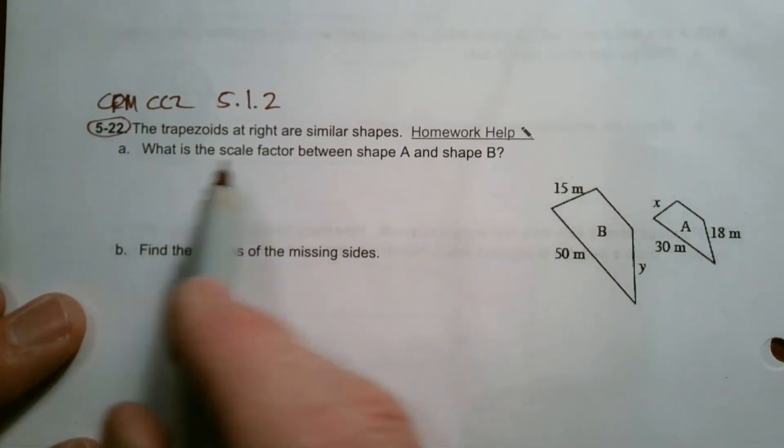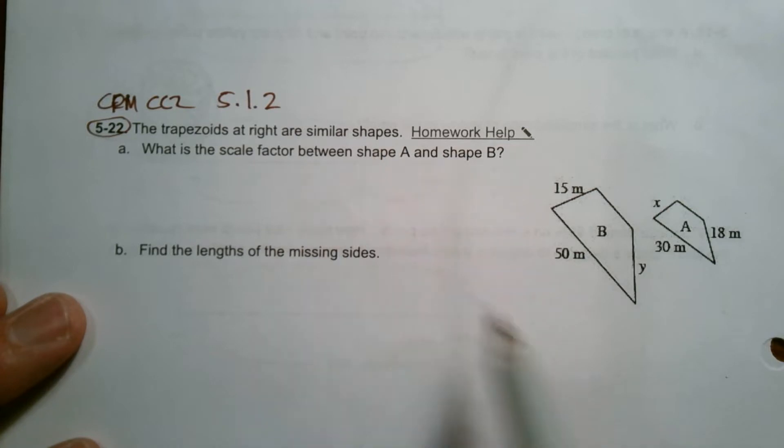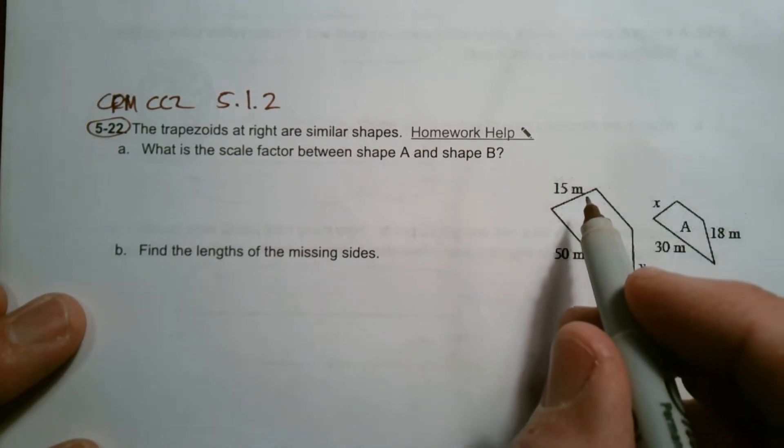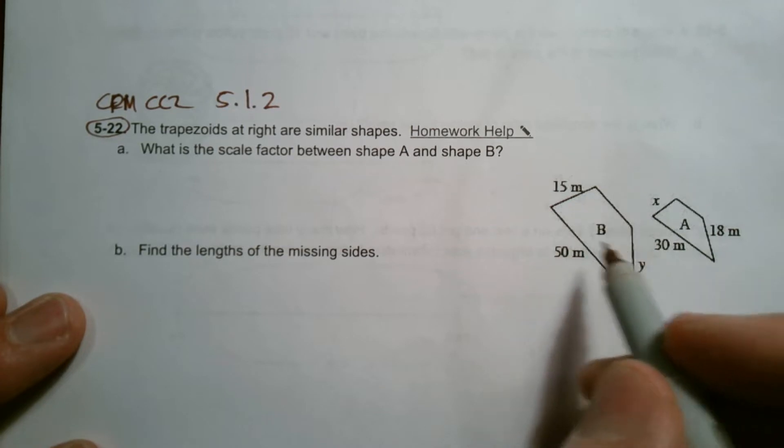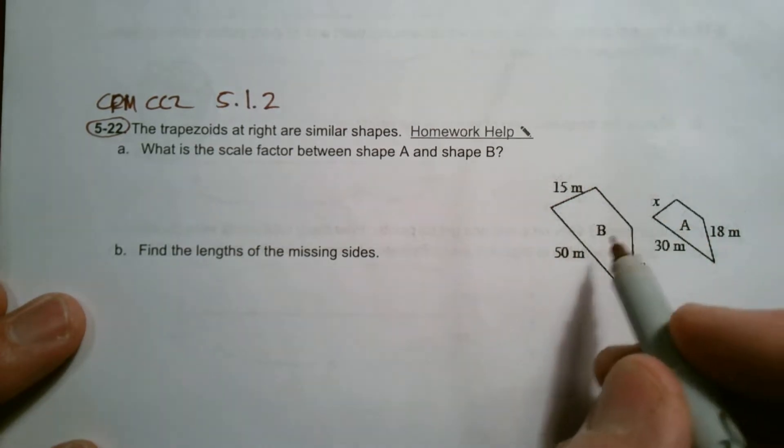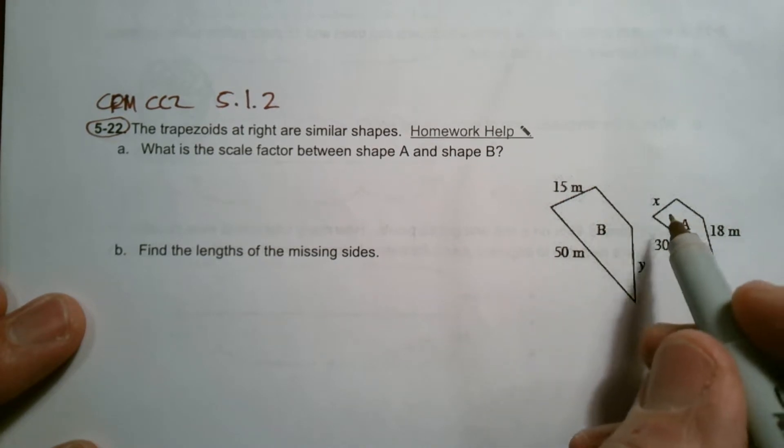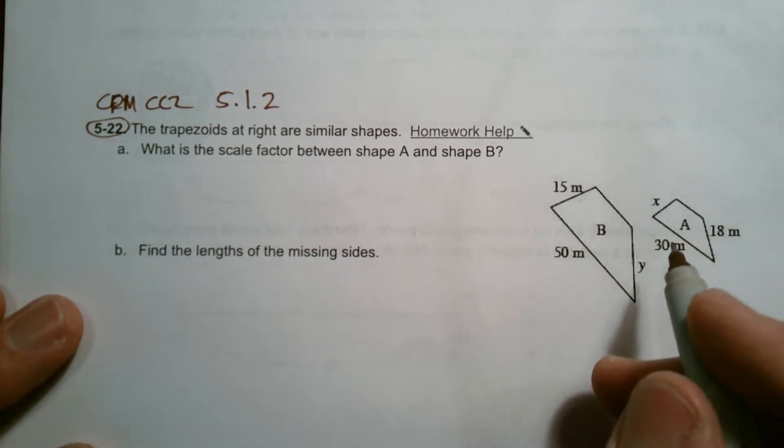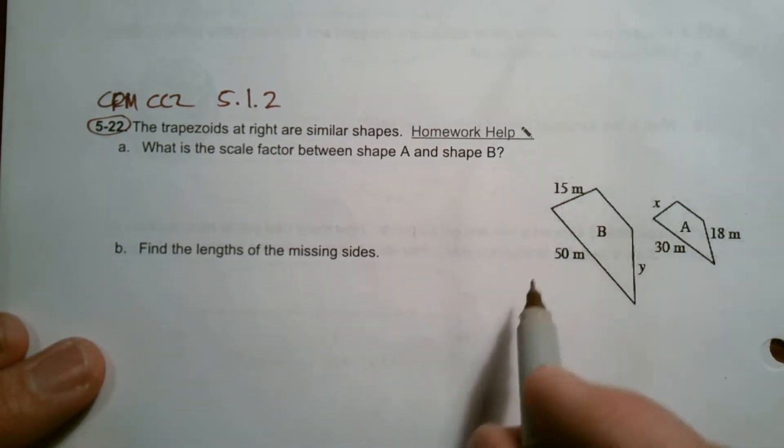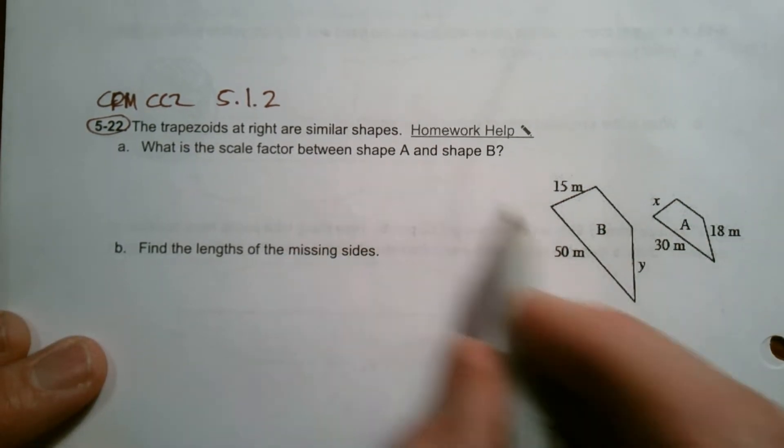So I'll read it. We'll go through it. The trapezoids at the right are similar shapes. What does that mean? Similar shapes mean they have the same angles, just one is either smaller or larger than the other. Same angles, same shape, just either if it's been enlarged or shrunk.